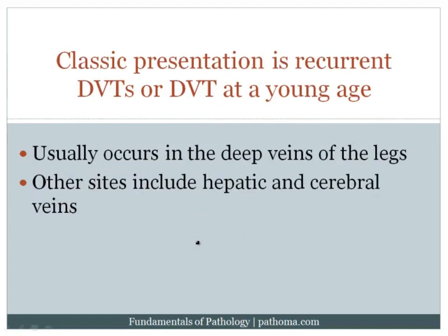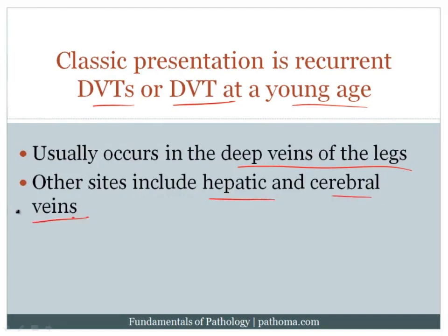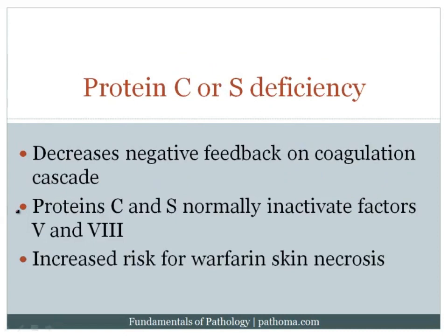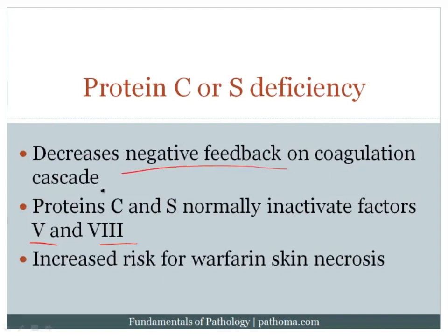When patients have a hypercoagulable state, they tend to present with recurrent DVTs or DVTs at a young age, usually in the deep veins of the legs. Other sites include the hepatic veins and cerebral veins. The first example is a lack of protein C or protein S. Protein C and protein S normally inactivate factors 5 and 8, which are amplifying factors in the coagulation cascade. Without protein C or S, there is less negative feedback on the cascade, and patients become hypercoagulable.